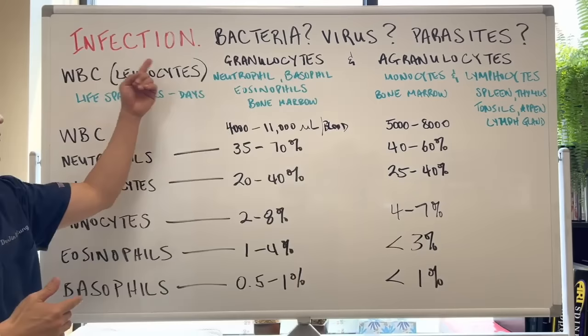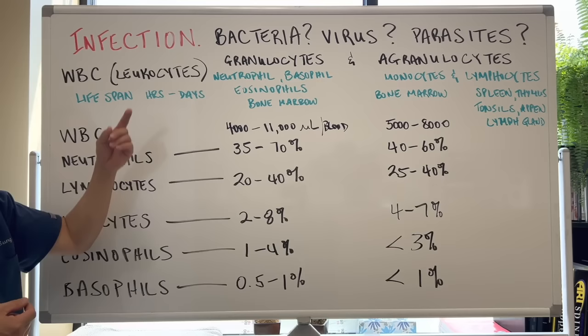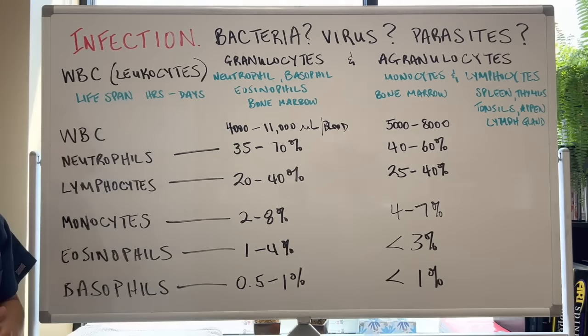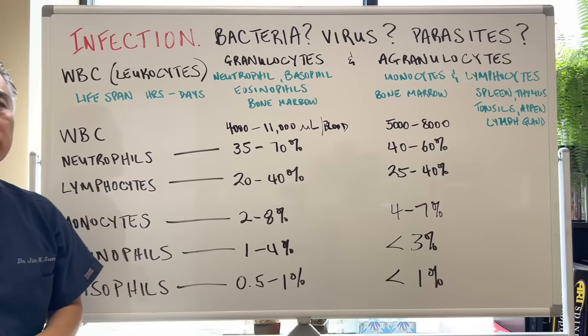Infection — bacteria, virus, parasites, white blood cells. You can test in the blood what we call a complete blood count with differential. Within that differential you're going to see white blood cells. White blood cells, or leukocytes, are made up of two different types: granulocytes and agranulocytes.